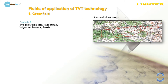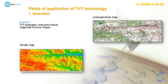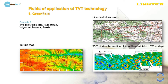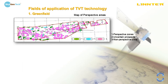TVT exploration, local level of study, Volga-Ural Province, Russia. It is a green field and all we had was the map of the license block. Using TVT, we built different vertical profiles and horizontal sections. We chose proper conditions for hydrocarbon accumulation and then built the map of perspective areas. Green color shows perspective zones, violet color shows non-perspective zones, and uncertain prospects are shown by blue color. The company started drilling according to our recommendations.